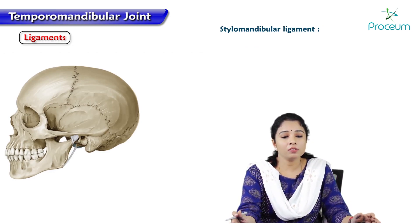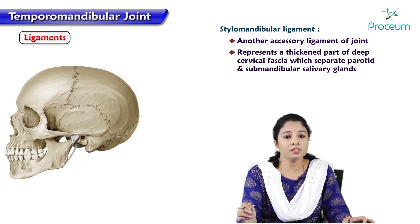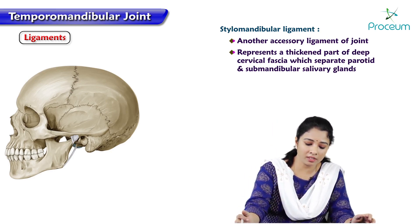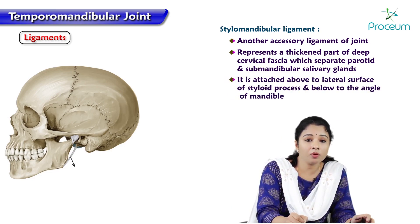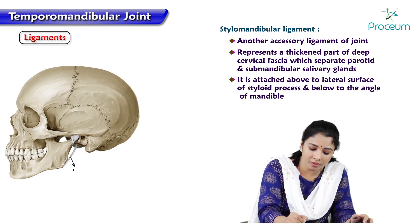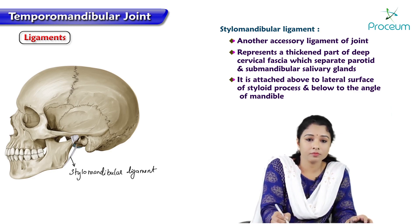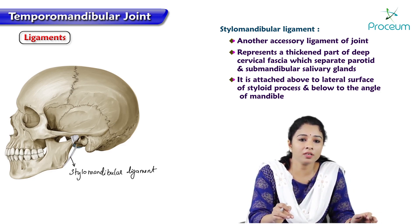The stylomandibular ligament is also an accessory ligament of the temporomandibular joint. It represents a thickened part of the deep cervical fascia which separates the parotid and submandibular salivary glands. It attaches above to the styloid process and below to the angle of the mandible.